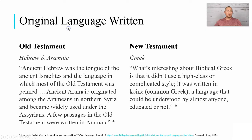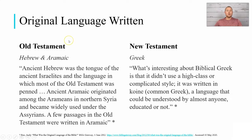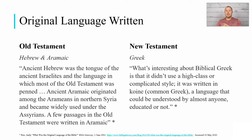Let's start out with the original languages in which the Bible was written. There were three languages: Hebrew, Greek, and Aramaic. The Old Testament was primarily written in Hebrew, the New Testament in Greek, and there was a little bit of Aramaic in the Old Testament as well.